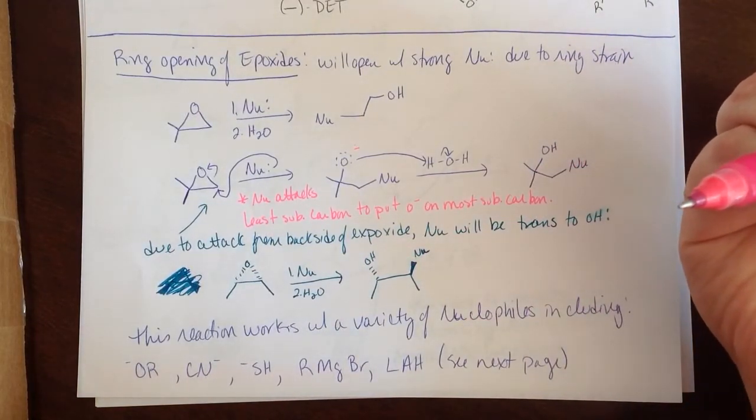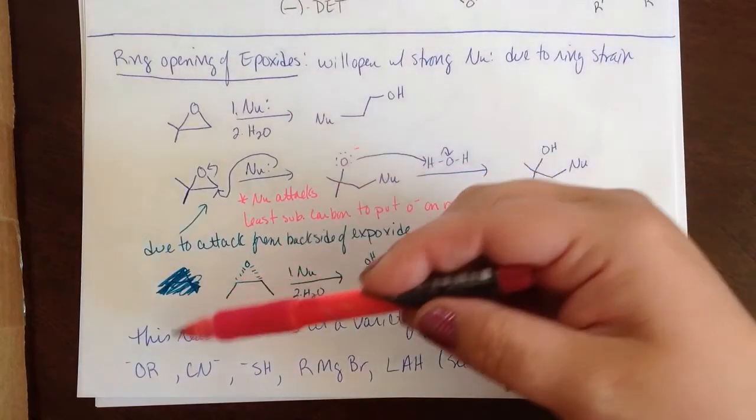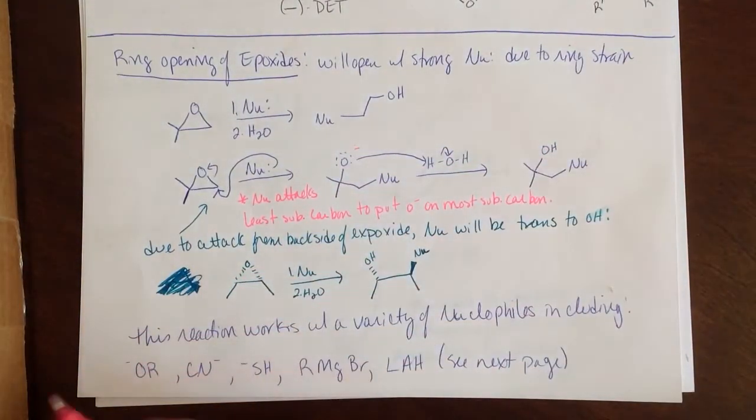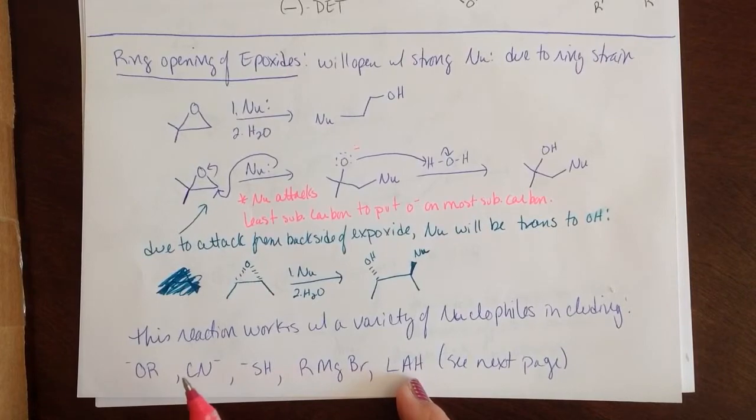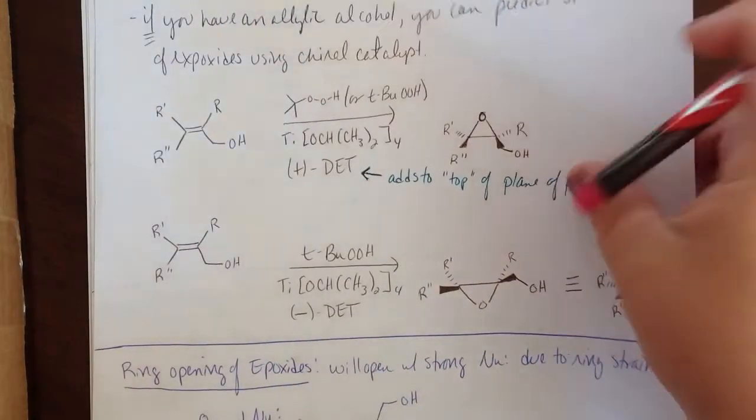These reactions work with a variety of nucleophiles, all of which are listed here. So you can do this with basic alcohols, CN, SH. You can use a Grignard for this, which is pretty cool because you can actually make a new carbon-carbon bond this way. Or you can just make sure that a hydrogen's attached. Let me show you what those reactions look like.